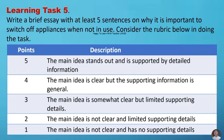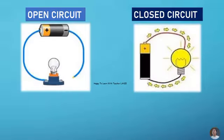Learning task number five. Write a brief essay with at least five sentences on why it is important to switch off appliances when not in use. Consider the rubric below in doing the task. Five points: the main idea stands out and is supported by detailed information. Four points: the main idea is clear but the supporting information is general. Three points: the main idea is somewhat clear but limited supporting details. Two points: the main idea is not clear and limited supporting details. One point: the main idea is not clear and has no supporting details.